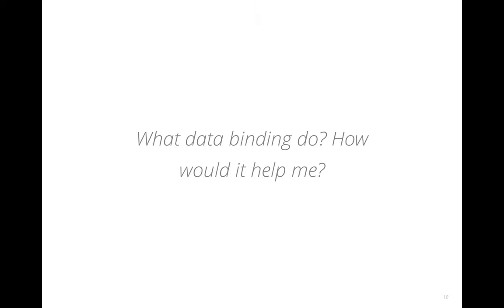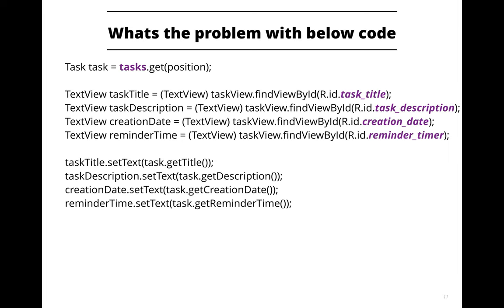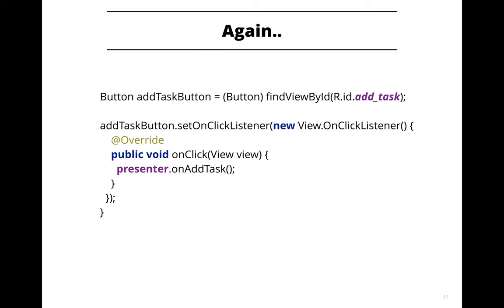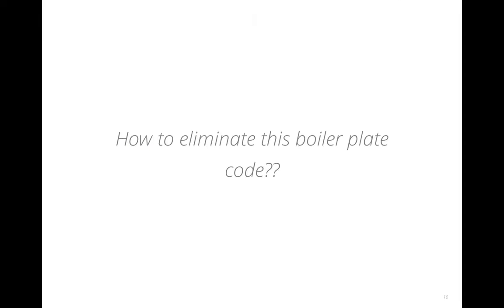What is data binding and how would it help me? Looking at a code snippet, you will see a pattern: findViewById, findViewById, then setText, setText, setText. This is a lot of code to write just to set a task object in a view. For event handling, the main part is the presenter's onAddTask, but you also have to add boilerplate code to find the button, set a listener on it, and then on click call onAddTask.